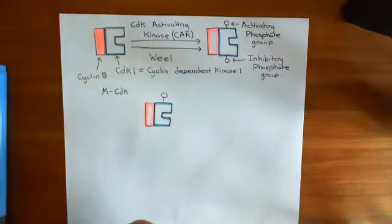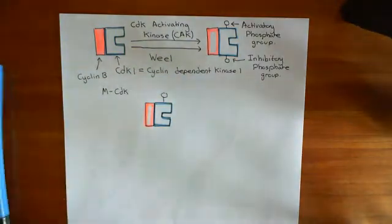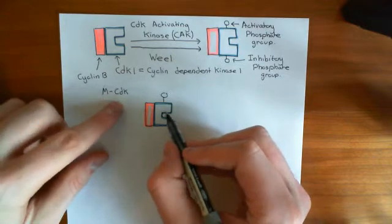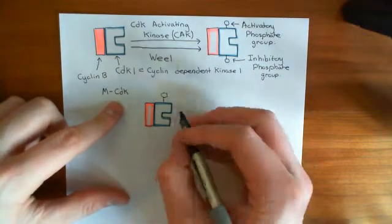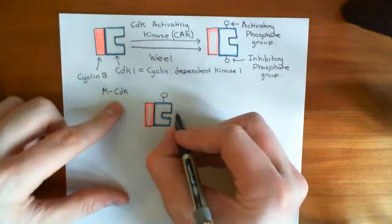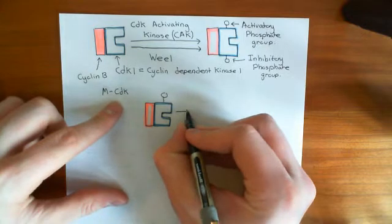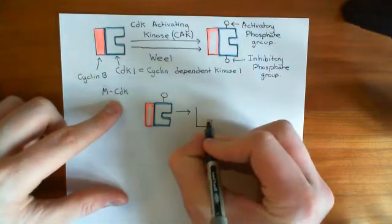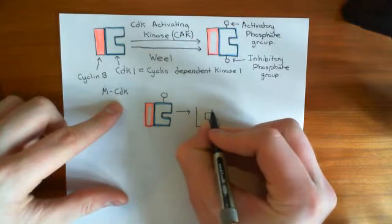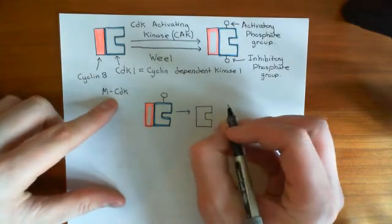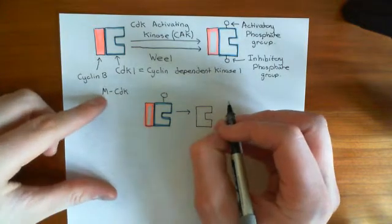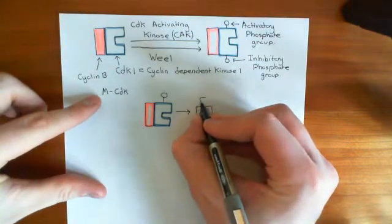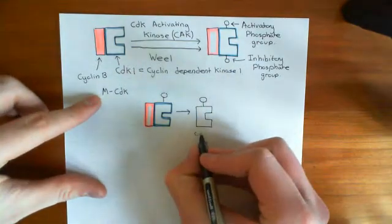The way in which it has a positive feedback effect is that once this MCDK is active — once this cyclin B CDK1 complex is active — it's going to phosphorylate an enzyme known as CDC25, rather than CDC20. CDC20 is coming up later. So it's going to phosphorylate this enzyme CDC25.